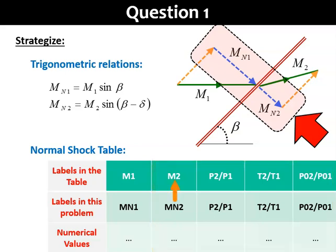For example, Mn2 is read off as M2 in the table. But the physical flow properties, i.e. the temperature, pressure, or density, are the same for a normal shock or for an oblique shock, as long as the normal component crossing into the shock is the same.